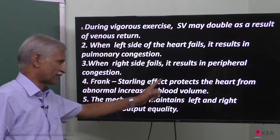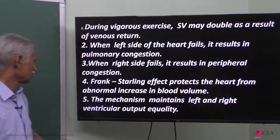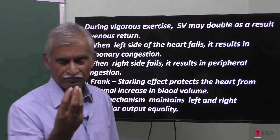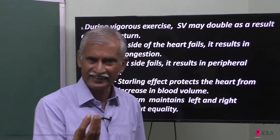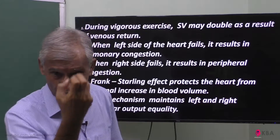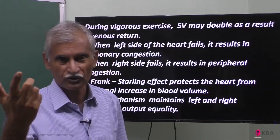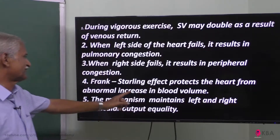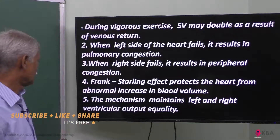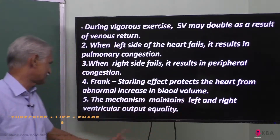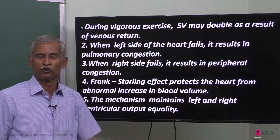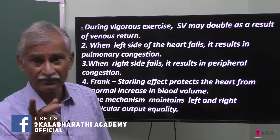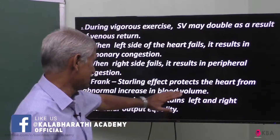The Frank-Starling effect protects the heart from an abnormal increase in blood volume. Every time during diastole, the volume of blood returning is pumped out — this balancing mechanism means that the left and right ventricular output are maintained equally. The mechanism maintains equal output from the left and right ventricles, matching the blood received.